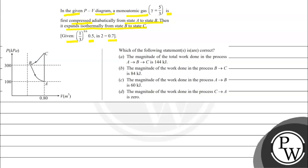First of all, let's discuss the key concept. The key concept is the condition for adiabatic change, that is PA·VA^γ.